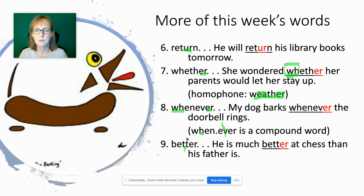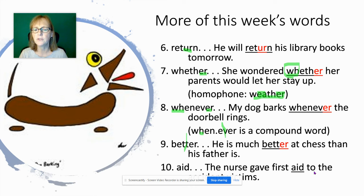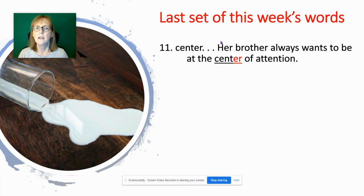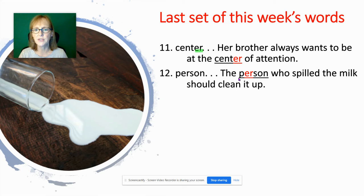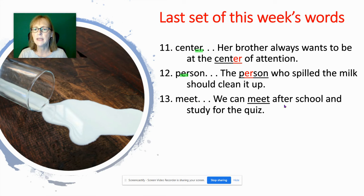'Better' — we split the syllable right between the two T's: bet-ter. 'He is much better at chess than his father.' Next, 'aid' — 'The nurse gave first aid to the accident victims.' 'Aid' has the long AI sound spelled A-I, which is how we spell that sound at the beginning or middle of a word. Then 'center' — 'Her brother always wants to be at the center of attention' — E-R spelling.